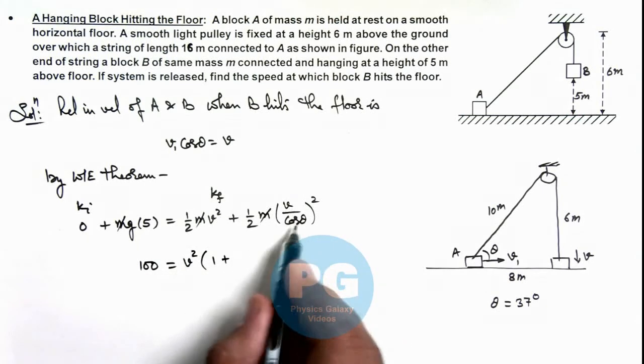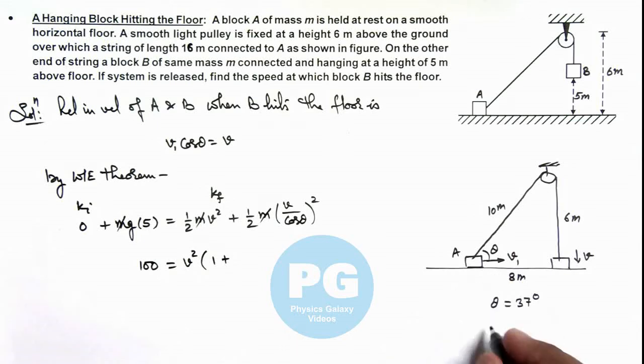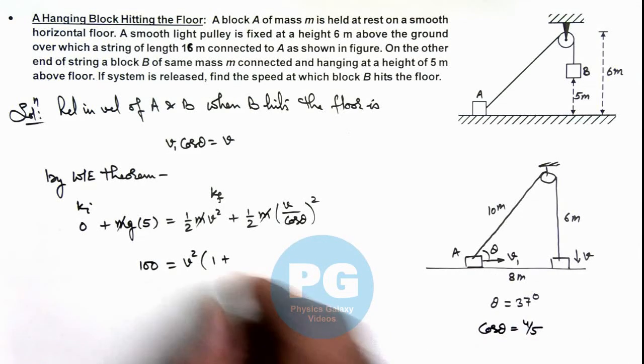This equals v squared times 1 plus 1 by cos squared theta, and the value of cos theta here is 4 by 5, so this will be 25 by 16.